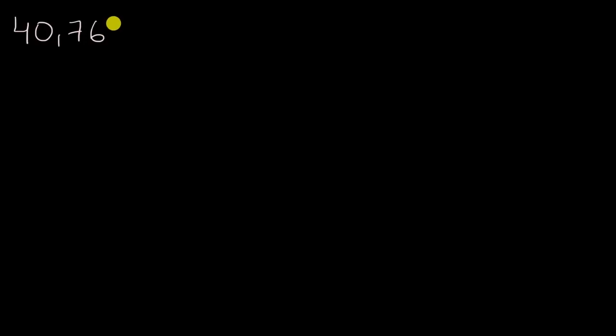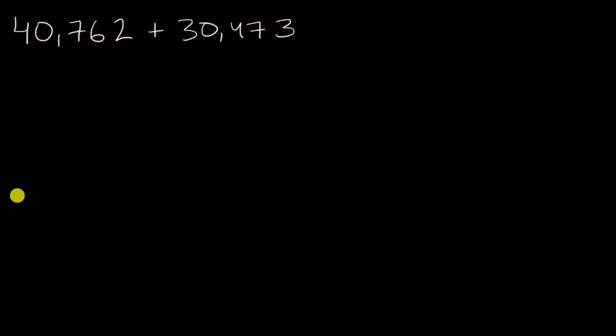What we're going to do in this video is get some practice adding multiple digit numbers. But the point of it isn't just to get the answer, but to understand why the method we use actually works. So we're going to add 40,762 to 30,473. You can pause the video and try to solve it on your own, but I encourage you to watch because it's really about understanding how things happen.